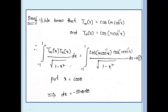The integral asked on the left side of the question is: integral from minus 1 to 1 of cos(m cos⁻¹ x) times cos(n cos⁻¹ x) divided by root(1 minus x squared) dx. This is the first equation.